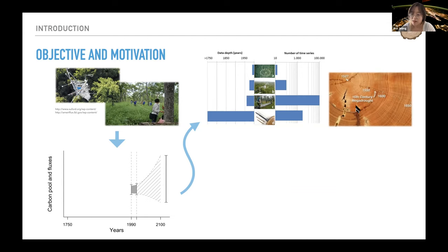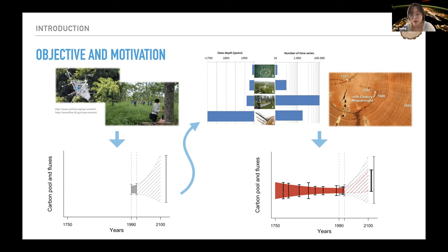Besides the tree ring width, there are thousands of tree ring data publicly available. After all, we expect that the uncertainty in prediction could be reduced with an improved model from a longer constraint.